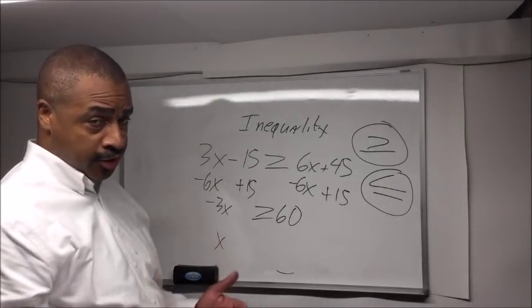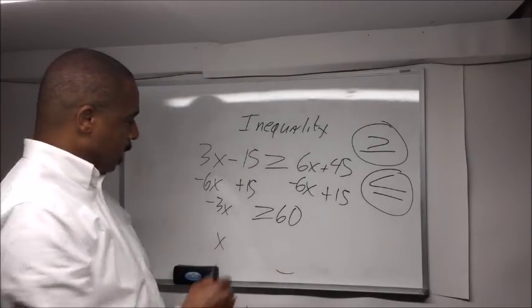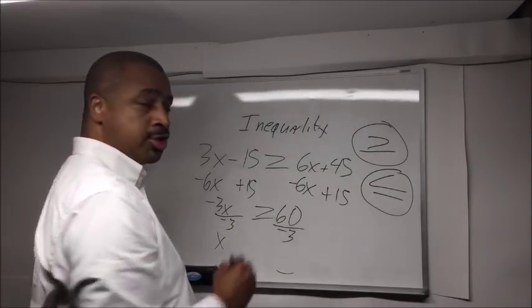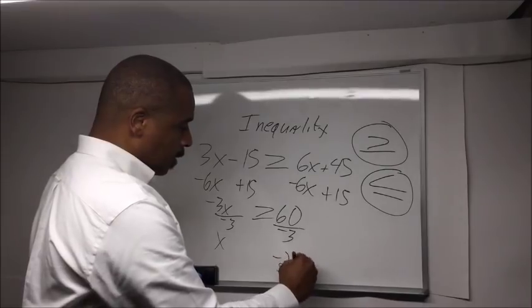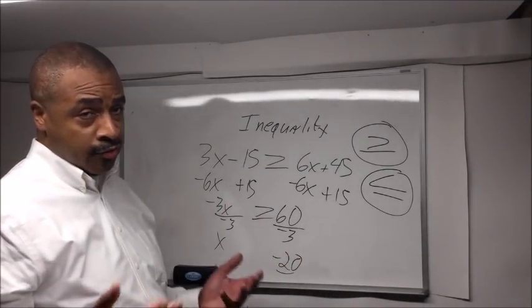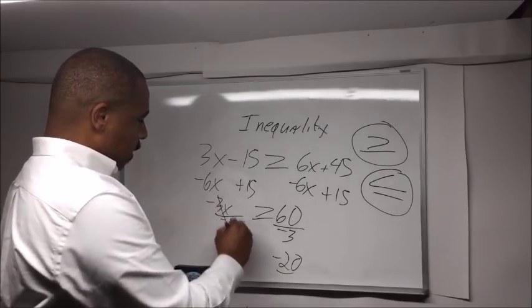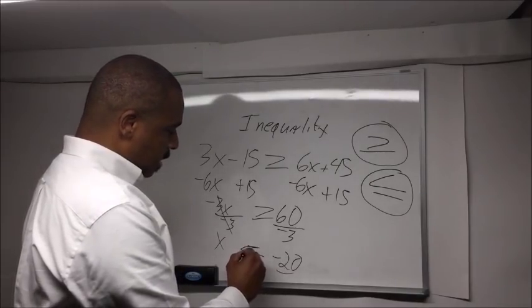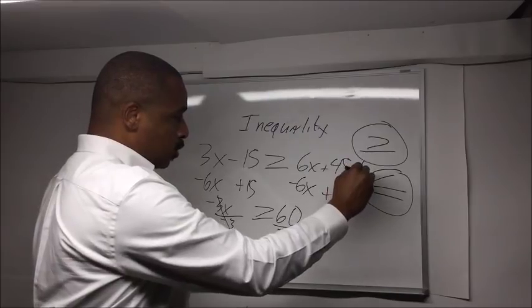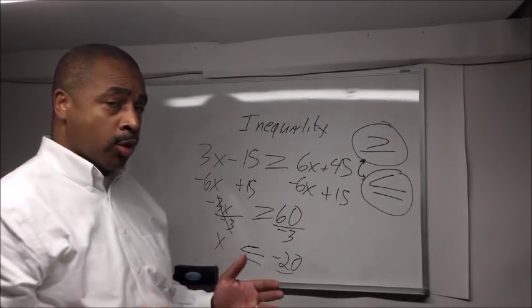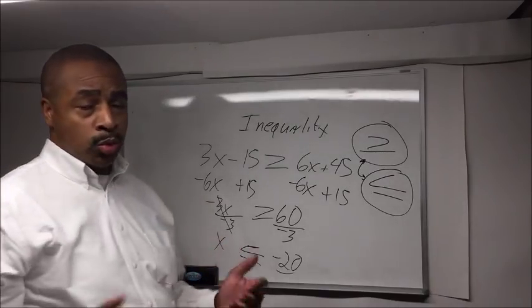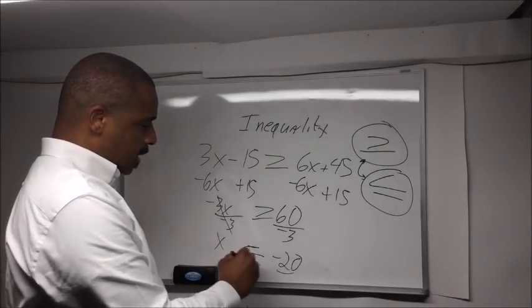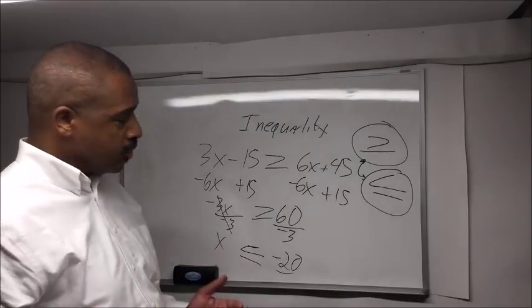We're going to do x divided by negative 3, and if we do it to this side, we're also going to do it to this side. 60 divided by negative 3 is negative 20 because a positive divided by a negative is a negative number, and a negative divided by a negative is a positive. That just leaves us x with our new sign, less than or equal to, because we had to do the change due to the rule with inequalities when dividing by a negative number. So your answer is x is less than or equal to negative 20.